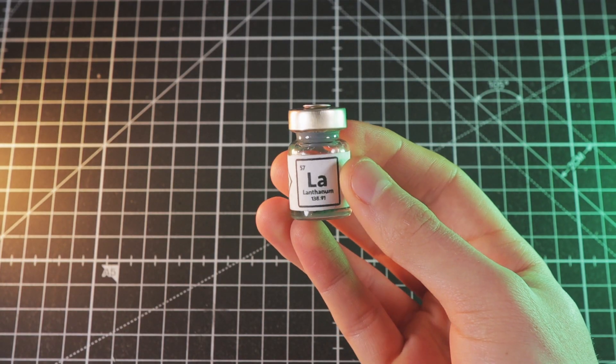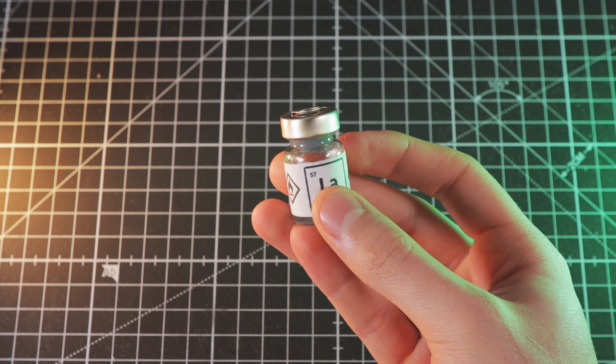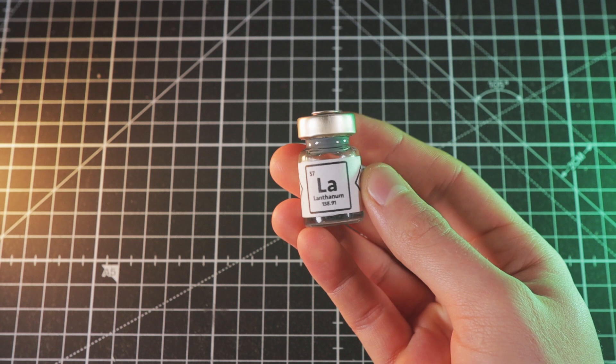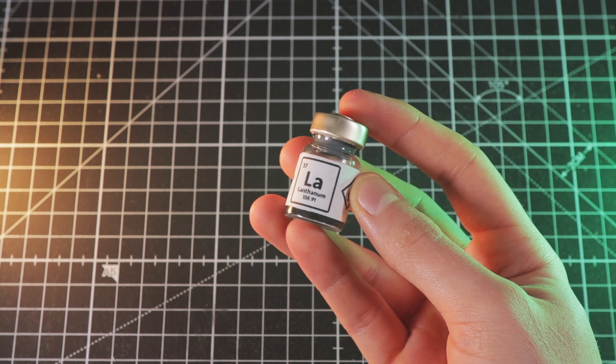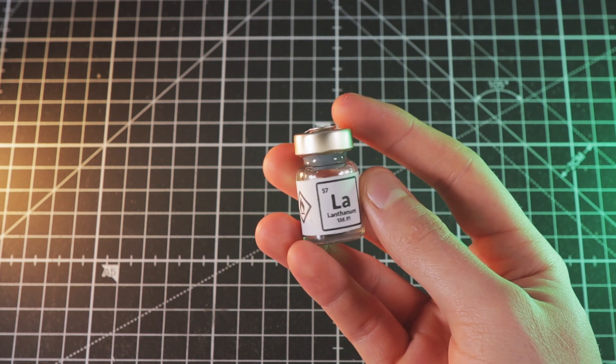Lanthanum-bromide scintillation crystals are well known for their incredible resolution, which measures as low as 2.2% at 662 keV. And since they have a relatively low price compared to other high-resolution detectors, they are a viable option for amateur gamma spectroscopy setups.